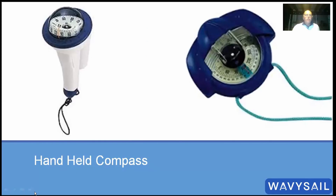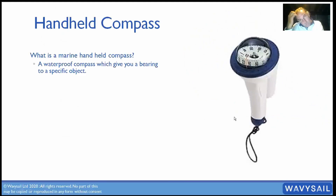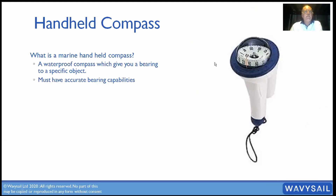Handheld compasses — what is a marine handheld compass? It's a waterproof compass which gives you a bearing to a specific object. Note that it has a sighting line — that's what you shoot your bearing on. It must have accurate sighting capabilities so you can line it up with a lighthouse, a buoy, or the top of a mountain.